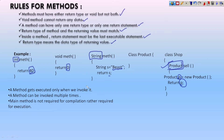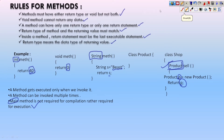A method gets executed only when we invoke it — we have to call this method somewhere in our program, then only it is going to get executed. A method can be invoked multiple times — you can call the method again and again. The main method is not required for compilation, but it is required for execution. So these are the set of rules you need to follow when writing a method.